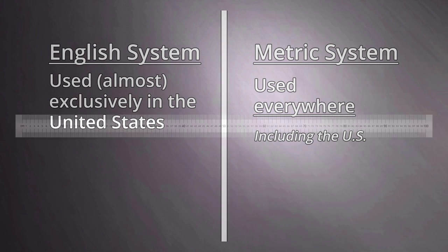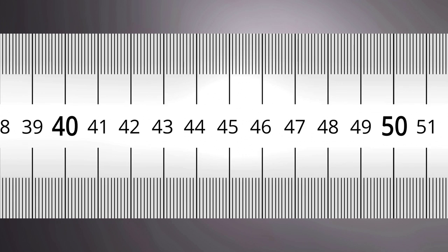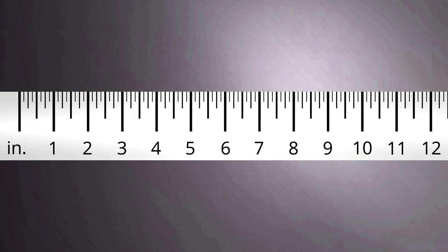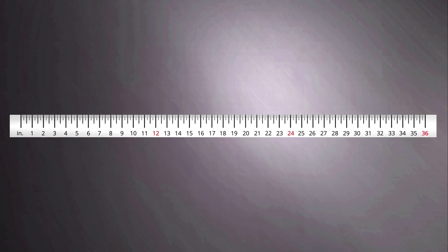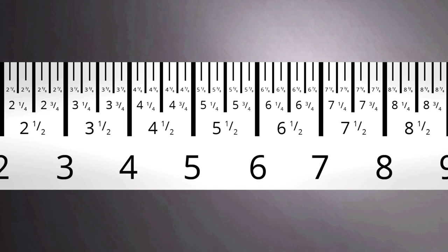In metric, the base unit is meters. Meters are subdivided into 100 equal parts to form centimeters, and each of those is subdivided into 10 parts called millimeters. In English, the units are inches — 12 inches equals 1 foot, and 3 feet equals 1 yard. Smaller units come from subdividing inches into small fractions.